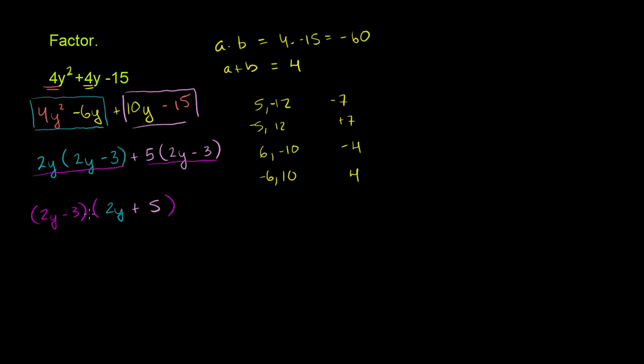There's no magic happening here. All I did is undistribute the 2y minus 3. I factored it out of both of these guys and took it out of the parentheses. If I distributed it in, you'd get back to this expression. But we're done. We factored it. We factored it into two binomial expressions. 4y squared plus 4y minus 15 is 2y minus 3 times 2y plus 5.